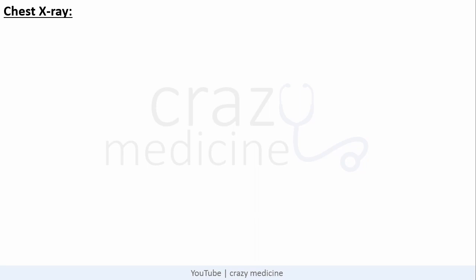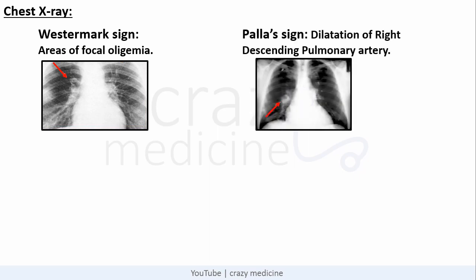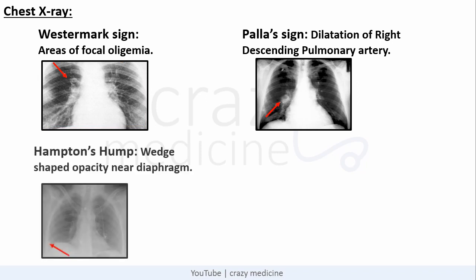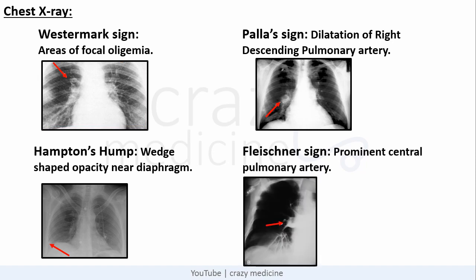Coming to X-ray findings of pulmonary embolism, which include important image-based questions. First is the Westermark sign — areas of focal oligemia. Next is the Pallas sign — dilatation of the right descending pulmonary artery, as seen in the image. Then Hampton's hump — a wedge-shaped opacity near the diaphragm, shown with a red arrow. And last is the Fleischner sign — a prominent central pulmonary artery.